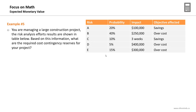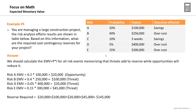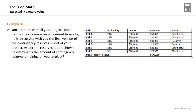A threat adds to the reserve while an opportunity reduces it. Calculate the EMV of each cost-affecting risk, assigning a positive sign for threats and negative for opportunities. Risks A, B, D, and E impact the budget. With three threats and one opportunity, the total reserve required for the project is $145,000 USD.